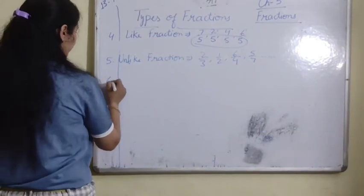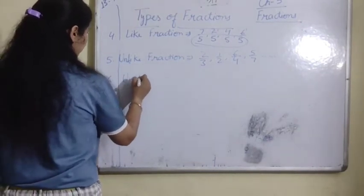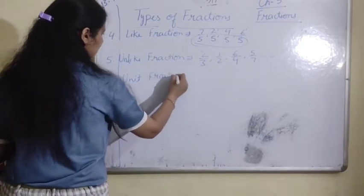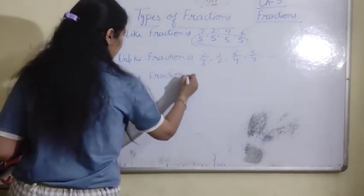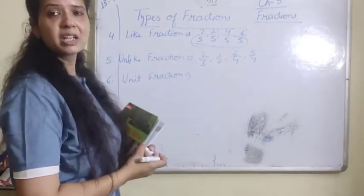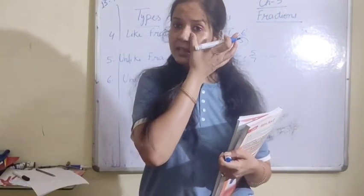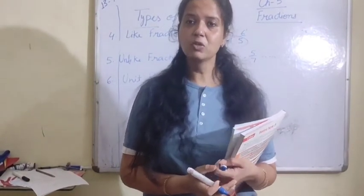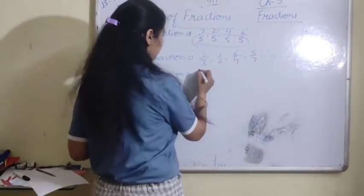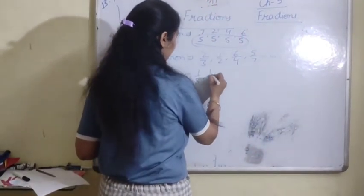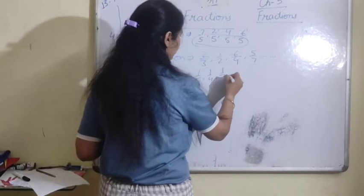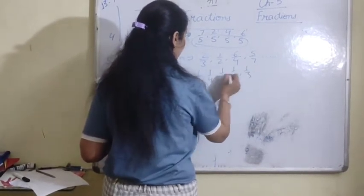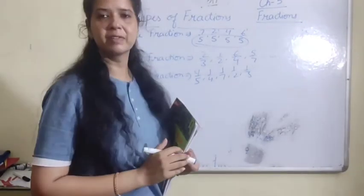And the next one is unit fractions. Unit fractions are those in which the numerator is 1. For example, 1 upon 5, 1 upon 4, 1 upon 7, 1 upon 2, 1 upon 3. Jahaanpar numerator mein 1 ho, woh unit fraction hai.